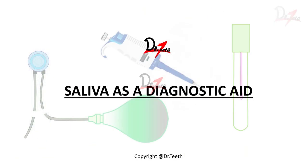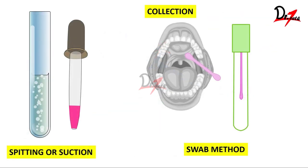The first collection technique is the draining or spitting technique: the subject collects saliva in the floor of the mouth and then spits it into a pre-weighed test tube. Alternatively, suction can be used to collect the saliva from the floor of the mouth.